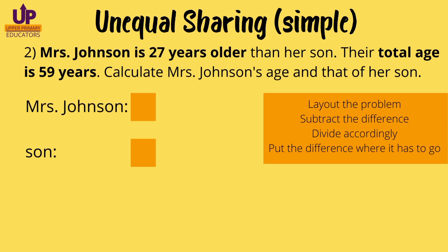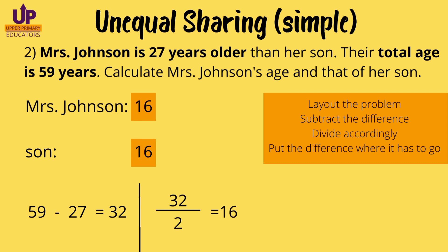Let's lay out our problem. We have Mrs. Johnson with an empty box and her son with an empty box as well. We subtract the difference — the difference is the extra portion. I keep repeating this because it's important: the difference is the extra or additional amount. We subtract 27 because Mrs. Johnson is 27 years older than her son, so 27 represents the extra portion. That 32 has to be shared equally between Mrs. Johnson and her son, so we divide 32 by 2, which gives us 16. Mrs. Johnson has 16 years and so does her son.